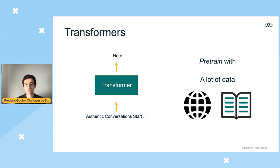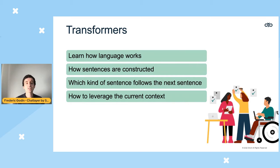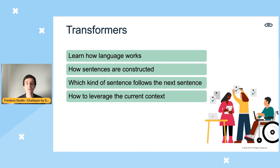The model is given the beginning of a sentence and learns to predict the next word. By doing this repeatedly, the transformer learned how language works — how sentences are constructed, which words follow others, and which sentences follow sentences. Even given an almost complete document, it can generate a coherent conclusion for an article about a specific subject.